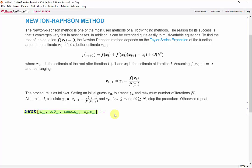x_i is determined using the previous estimate and the derivative of the function. We'll start with calculating the derivative. So df is equal to d of the function of x.